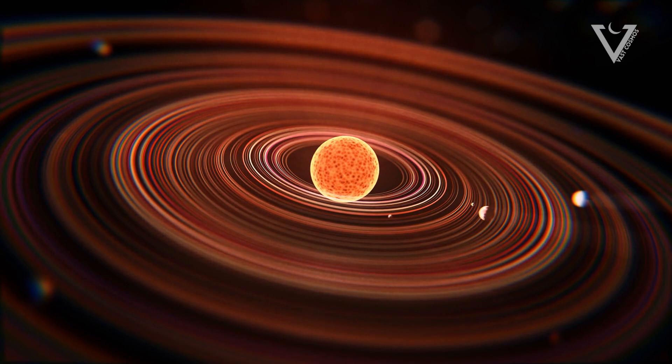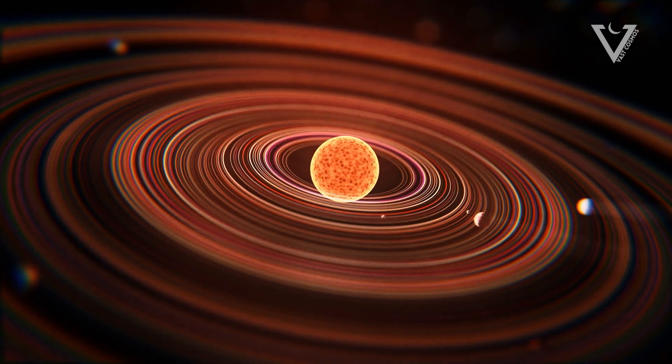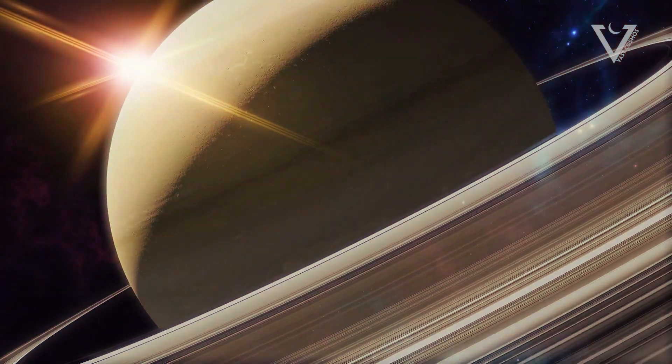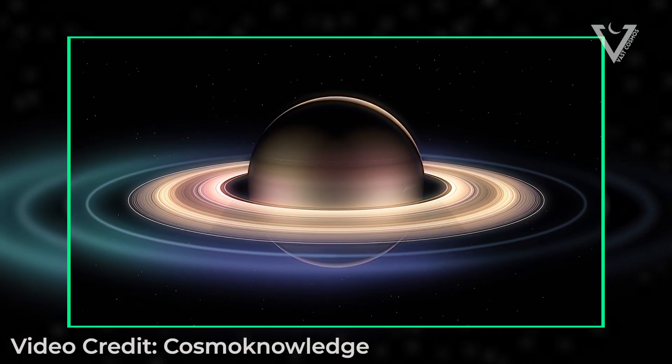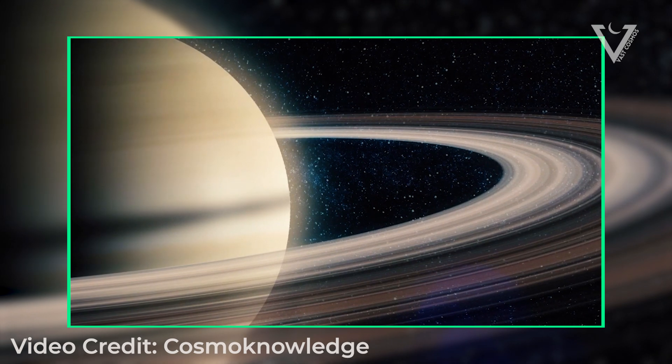Alternatively, it could be a protostar that failed to become a brown dwarf. The discovery, facilitated by gaps in the rings, unveiled the planet's size, position, and the extraordinary scale of its ring system.